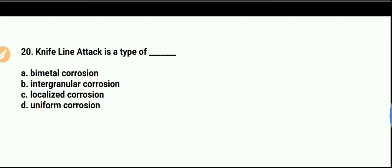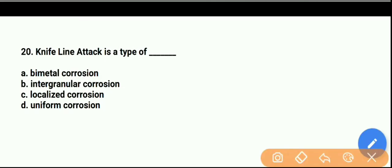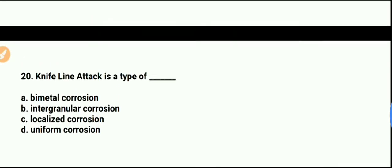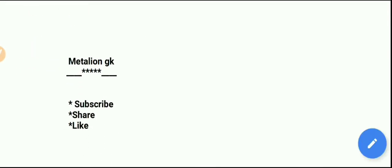Question number 20: What is a knife line attack, and what type of corrosion is it? Option A is bimetallic corrosion, option B is intergranular corrosion, option C is localized corrosion, option D is uniform corrosion. Option B is the right answer — knife line attack is a type of intergranular corrosion. Remember this.